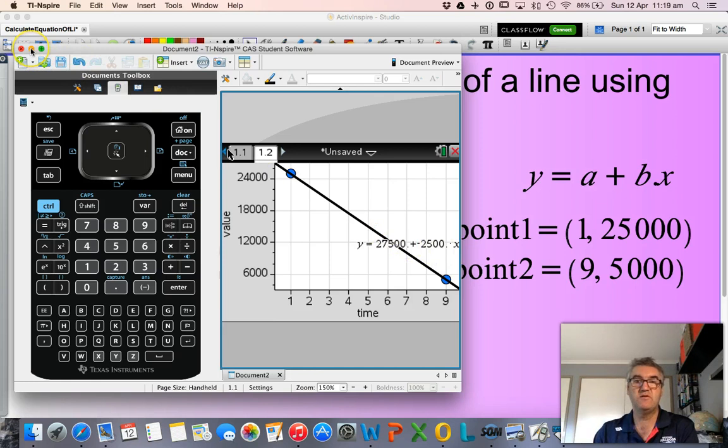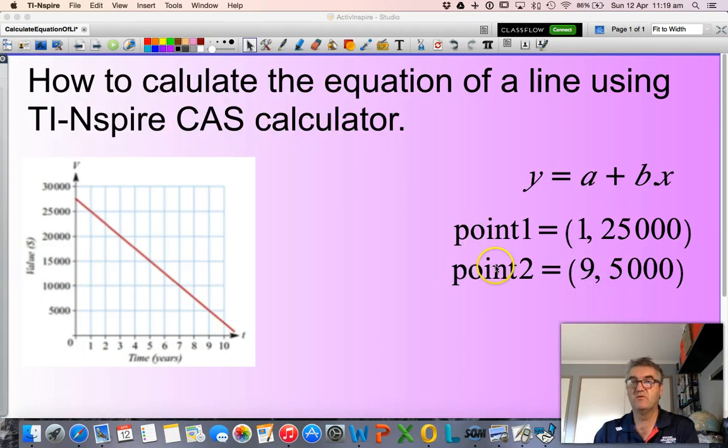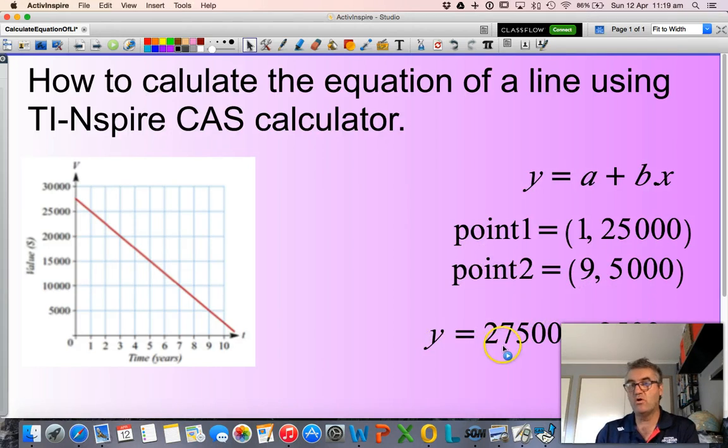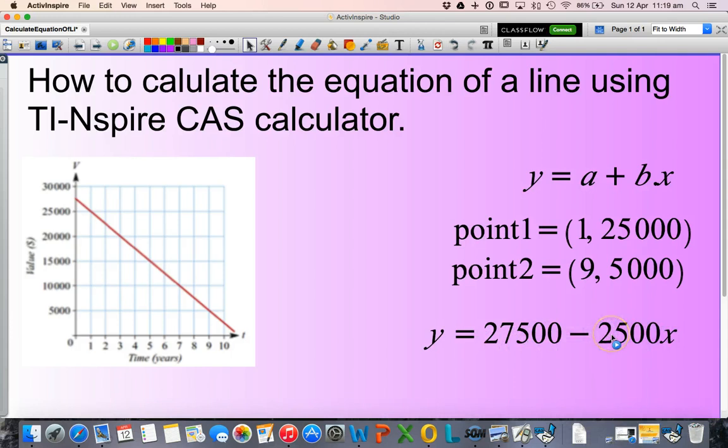So just tuck that away there. So back to the screen here. That is the equation there. Y equals 27,500 minus 2,500x.